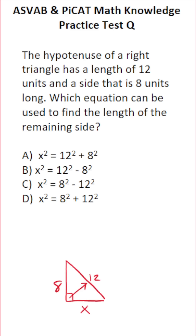How do you find a missing value in a right triangle? You use the Pythagorean theorem, which says a squared plus b squared is equal to c squared. This is a formula you need to know for the ASVAB and PyCat, so commit it to memory. A and b are the legs of the right triangle, and c is the hypotenuse.